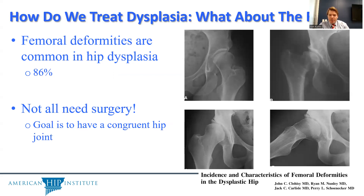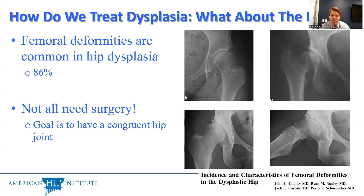The femur is often abnormal in the setting of hip dysplasia because the femur and acetabulum develop together. One study found femoral deformity was present in up to 86% of patients requiring periacetabular osteotomy. Importantly, not all of these deformities require surgery. The goal at the end of the case should be a congruent hip joint — if that can be achieved with just the acetabular osteotomy, a femoral osteotomy is not needed. However, if a congruent joint cannot be obtained after the acetabular osteotomy, then a femoral osteotomy would be indicated.